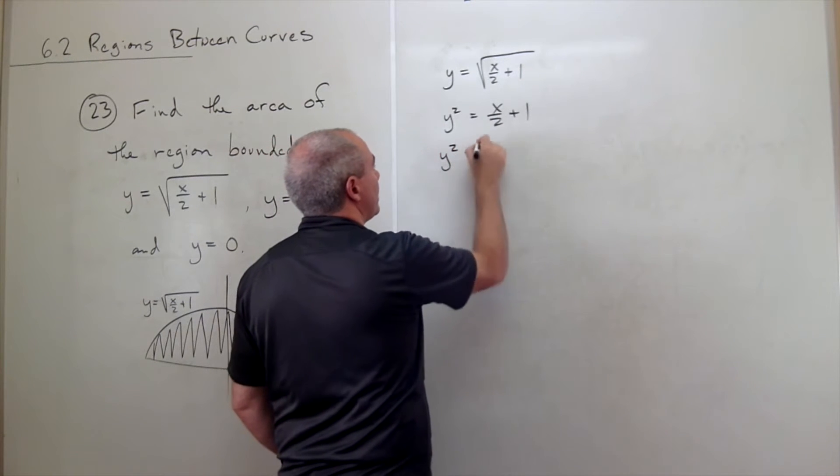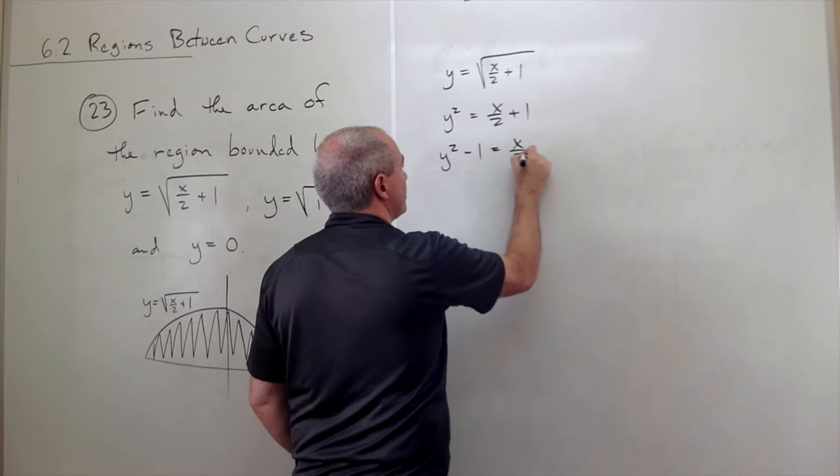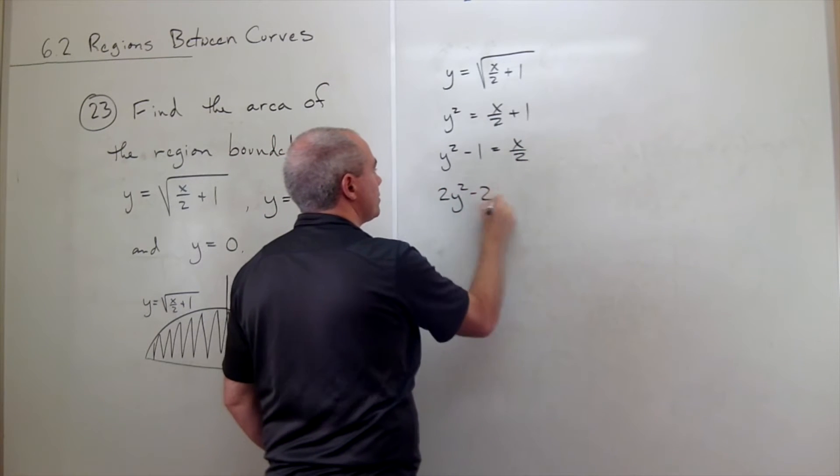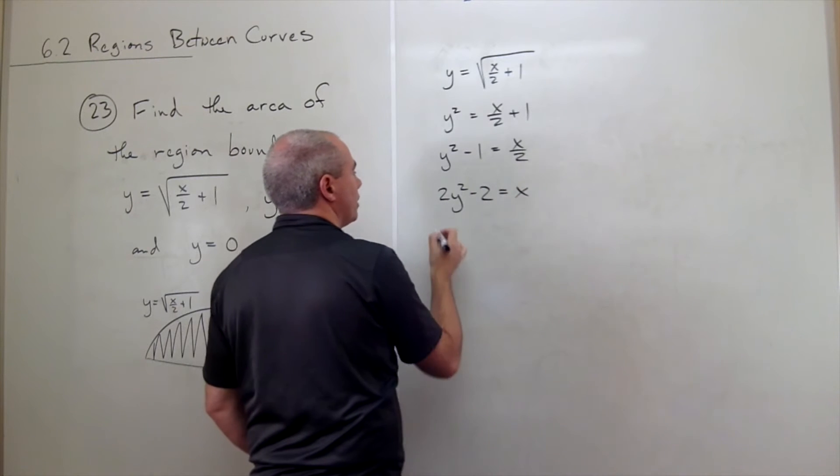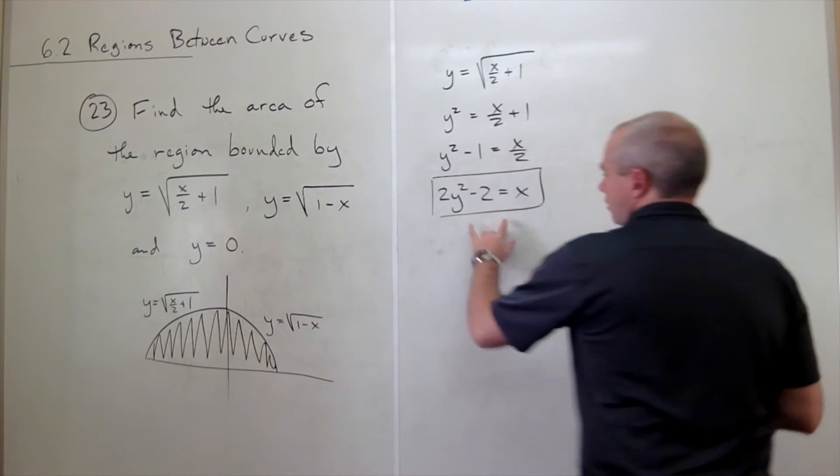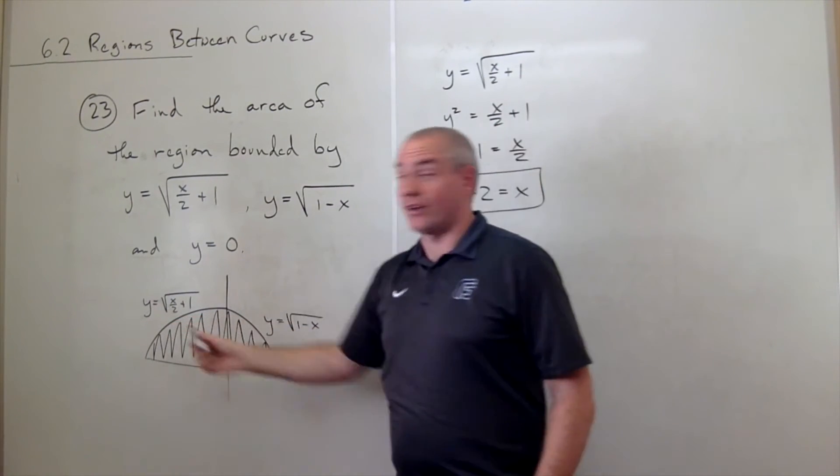Then I get that y squared minus 1 is x over 2. And finally, I get that 2y squared minus 2 is x. So this is one of my functions, the bottom function.